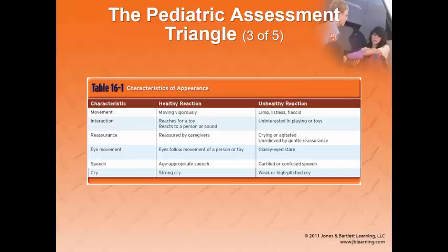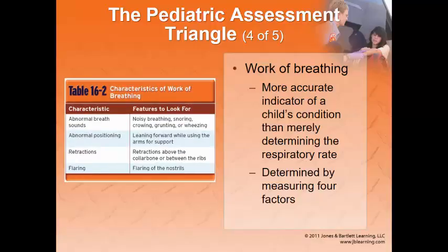When strangers enter a child's environment, you expect them to be visibly upset and clinging to their parents — that's a good sign. When they don't care that you're there, that's a red flag. Regarding work of breathing: a child struggling to breathe uses enormous energy and will tire out. Breathing 60 times a minute is a red flag at any age — that's one breath per second — and they're only exchanging dead air space, not getting deep breaths down to the alveoli.